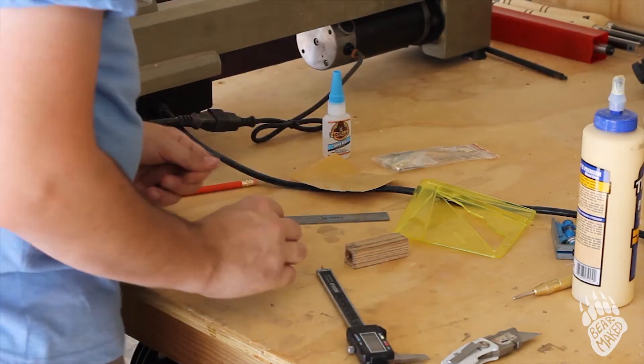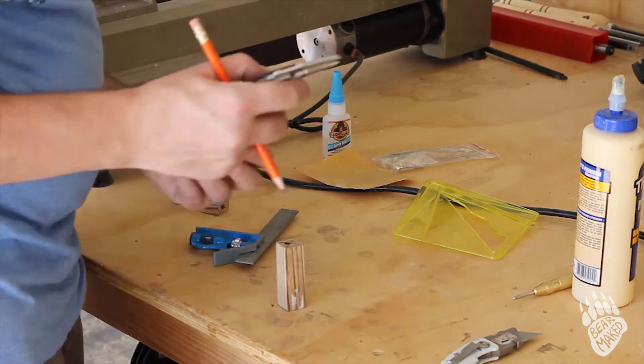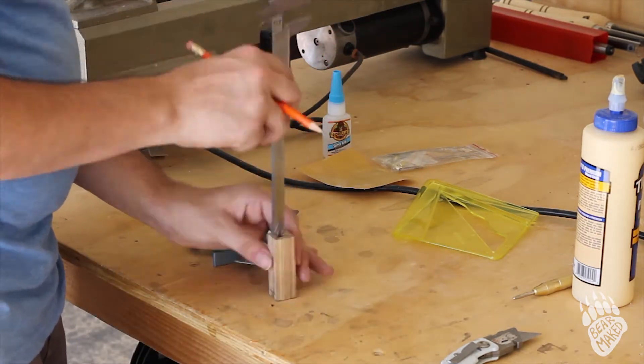And here I'm just using calipers to measure out how much extra wood there is where the tube isn't, so I can mark that off.